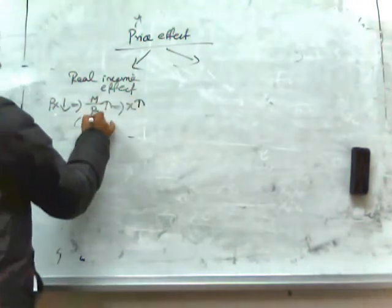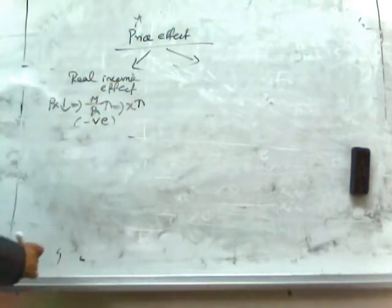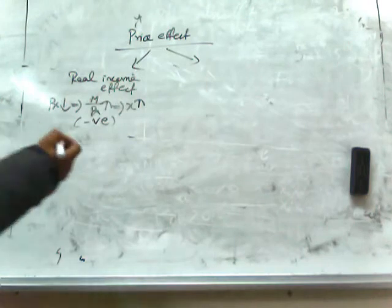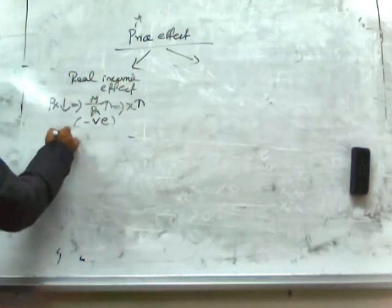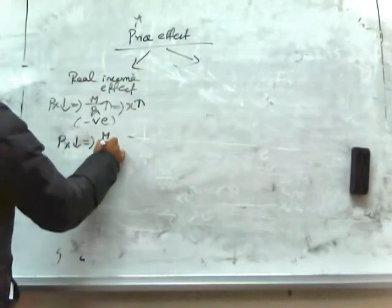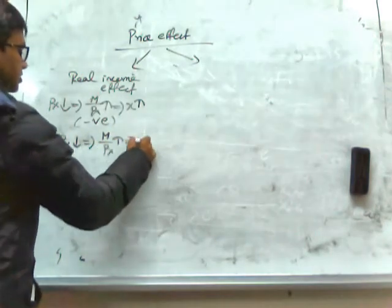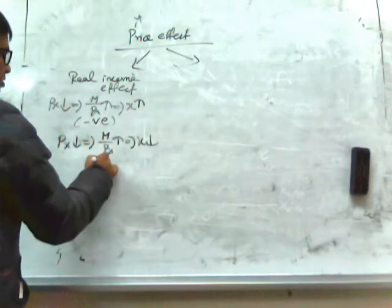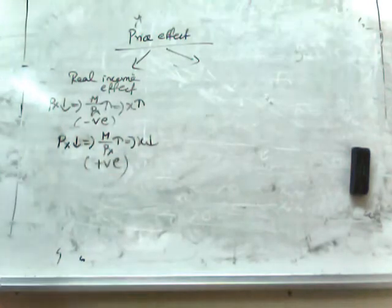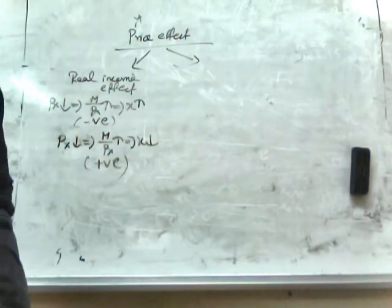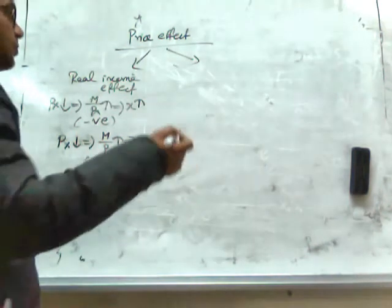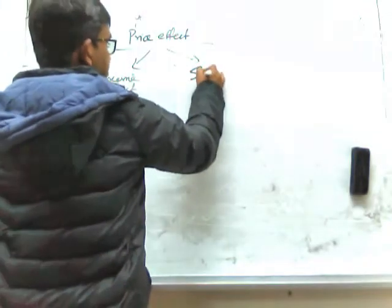This income effect is definitely negative. In the opposite case, if the commodity is an inferior commodity, when PX falls, M/PX will rise and consequently demand for X falls. So this is positive — both the price and quantity are moving in the same direction. The second component is the substitution effect.